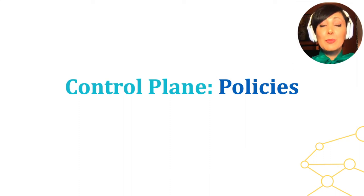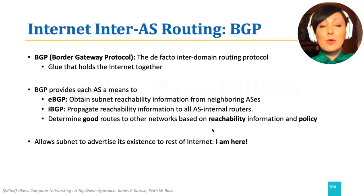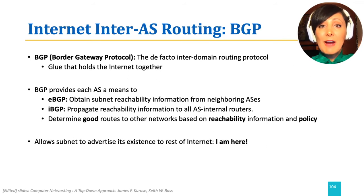Now, it's time for a brief exploration of inter-AS routing, which is when policies become important in control plane decision making. BGP, defined in RFC 4271, which stands for Border Gateway Protocol, is the de facto inter-domain routing protocol.